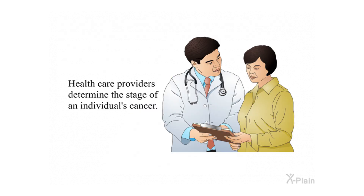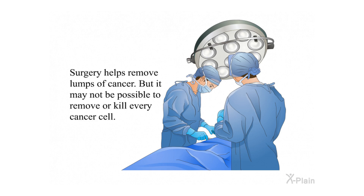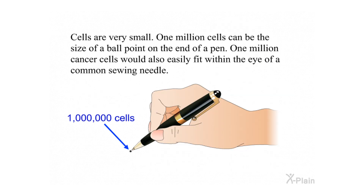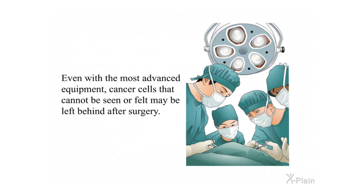Health care providers determine the stage of an individual's cancer. Treatment. Surgery helps remove lumps of cancer, but it may not be possible to remove or kill every cancer cell. Cells are very small — one million cells can be the size of a ballpoint on the end of a pen, and one million cancer cells would also easily fit within the eye of a common sewing needle. Even with the most advanced equipment, cancer cells that cannot be seen or felt may be left behind after surgery.